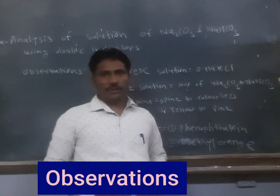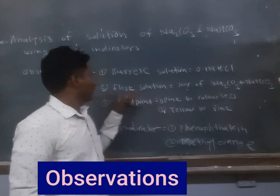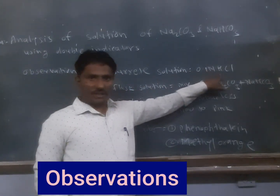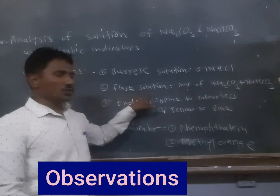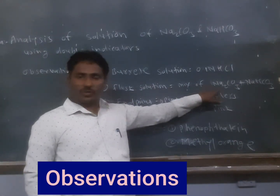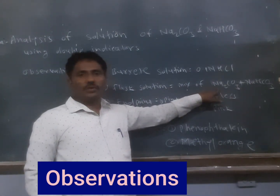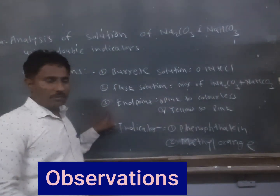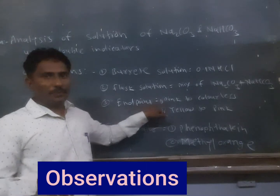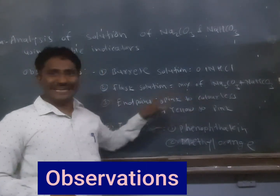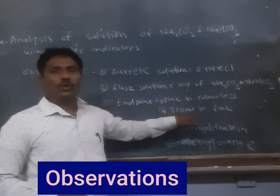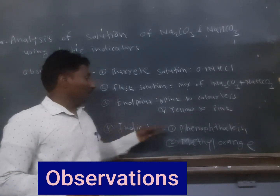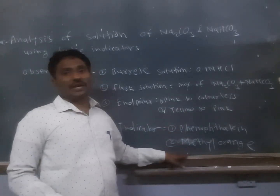Observations for the practical: burette solution is 0.1 normal HCl; flask solution is a mixture of sodium carbonate and sodium bicarbonate. The first end point is pink to colorless, and the second end point is yellow to pink color. Indicators used are phenolphthalein and methyl orange.